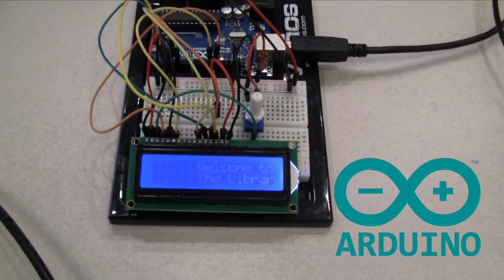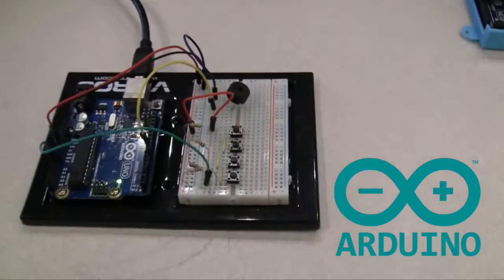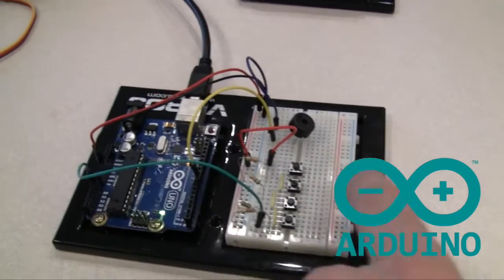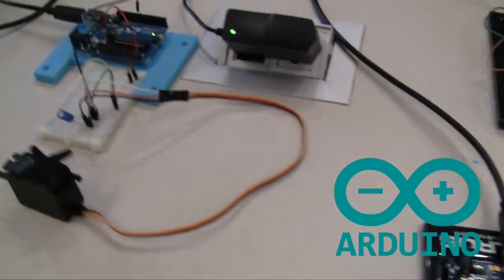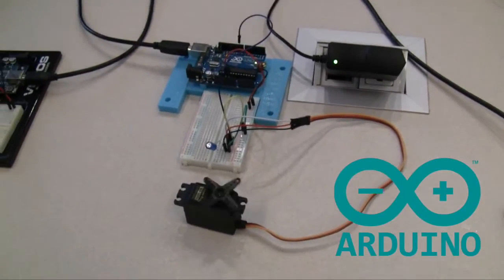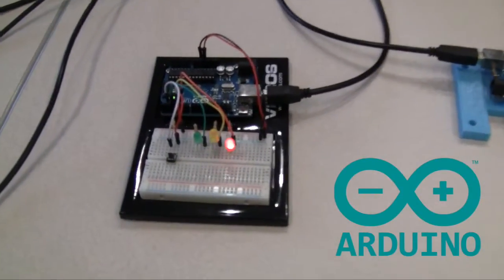Arduino senses the environment by receiving inputs from many sensors and affects its surroundings by controlling lights, motors, and other actuators. You can tell the Arduino what to do by writing code in the Arduino programming language and using the Arduino development environment.